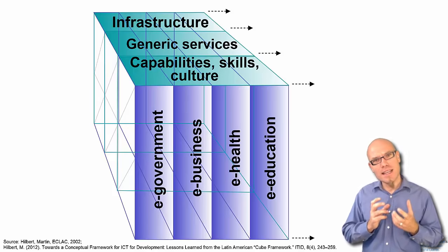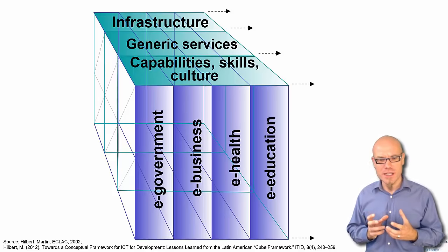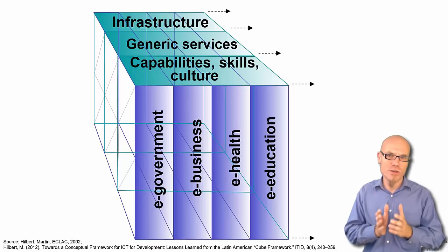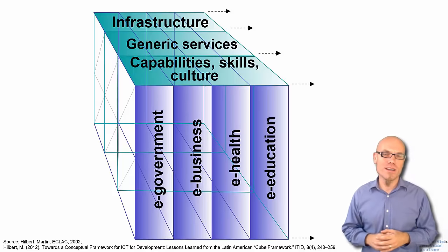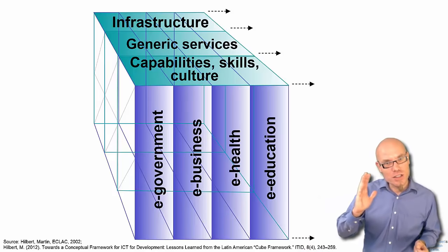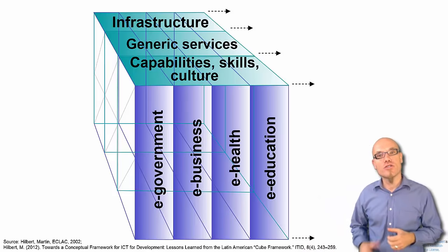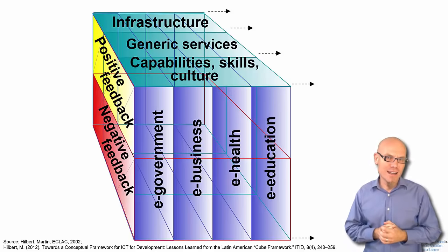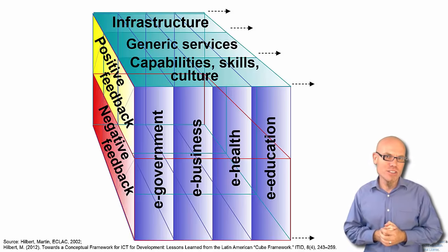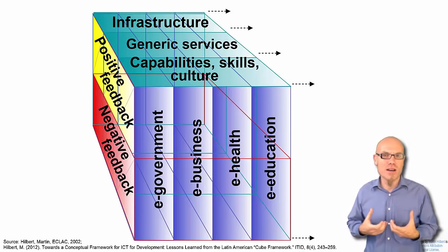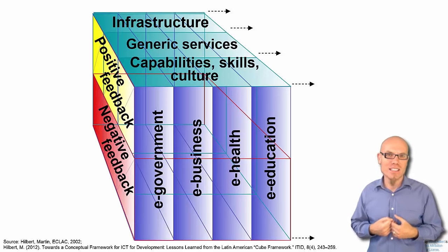This is necessary but not sufficient. We have the foundation — these horizontal layers — and we have these vertical sectors of social modernization. Now we need the third dimension, which refers to these guiding interventions. There are two basic kinds of interventions you can execute in a system such as social systems: positive and negative feedback.